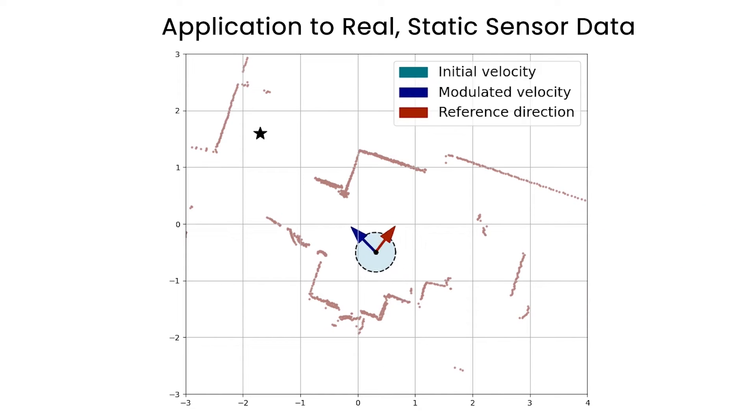It has been applied to static snapshots of real distance sensor data. The simulated robot can avoid narrow doorways.